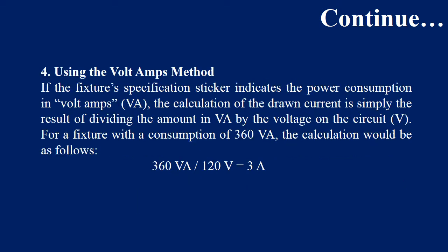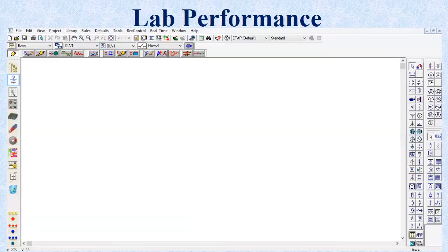The fourth method is the voltage-ampere method. If you have a circuit rated in VA, you divide the VA rating by the voltage. For example, if I have a VA rating of 360 and the available voltage is 120 volts, dividing 360 by 120 gives a current of 3 amperes. So I need to put a 3 ampere circuit breaker.